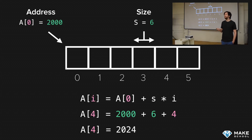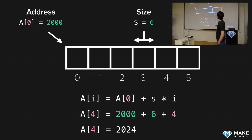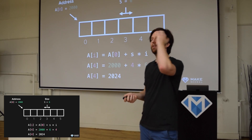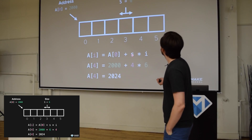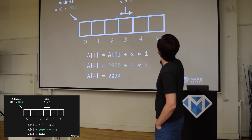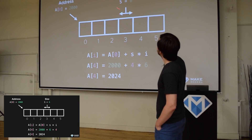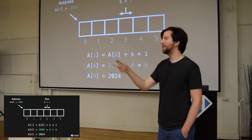We can calculate the address of any array element right away — and that has a really important consequence. We can access that value immediately. That means in arrays, when we want to access a certain element by its index, it's constant time access. It doesn't matter how big the array is — we can index at any point and grab the item immediately without having to search through the array.